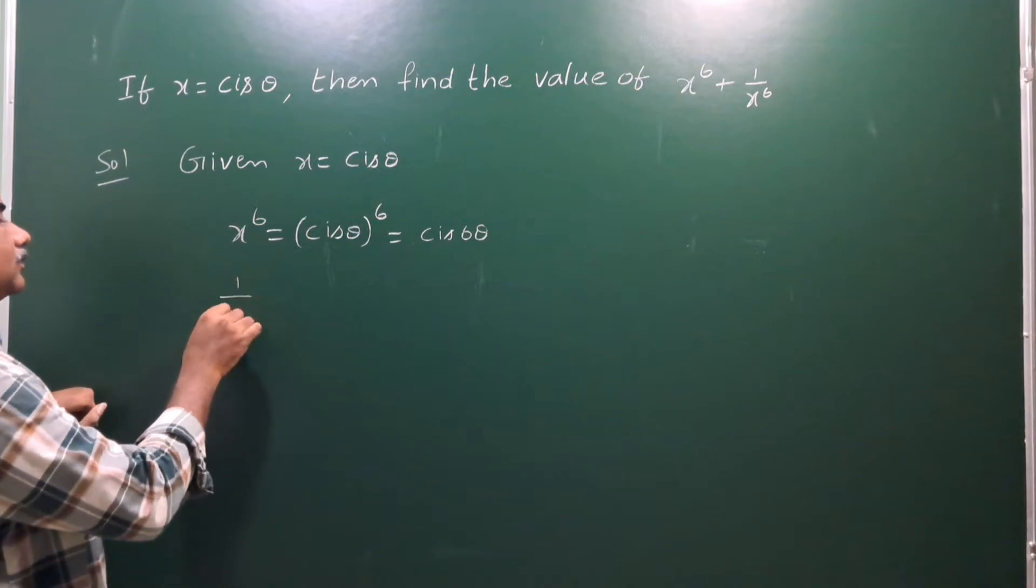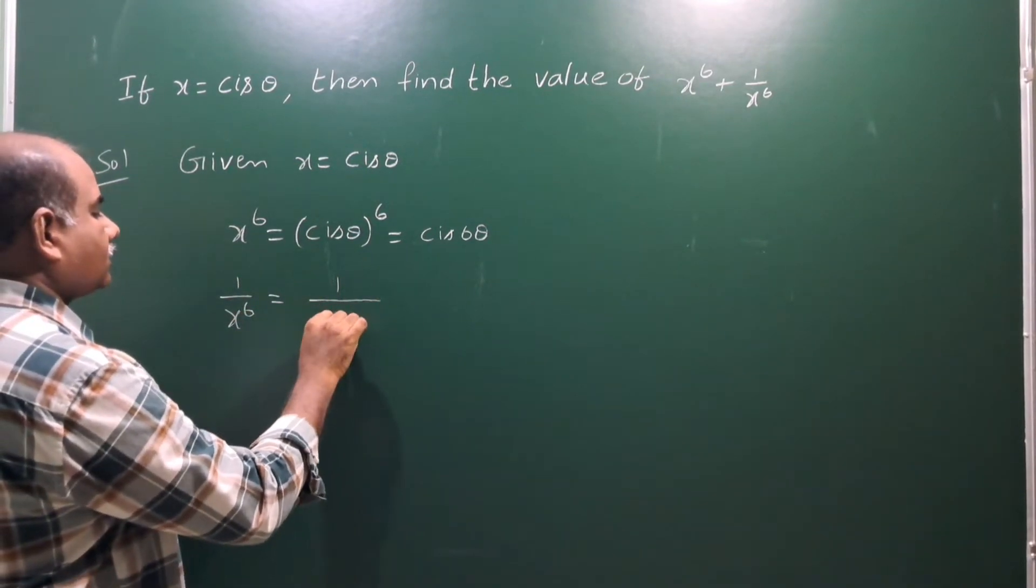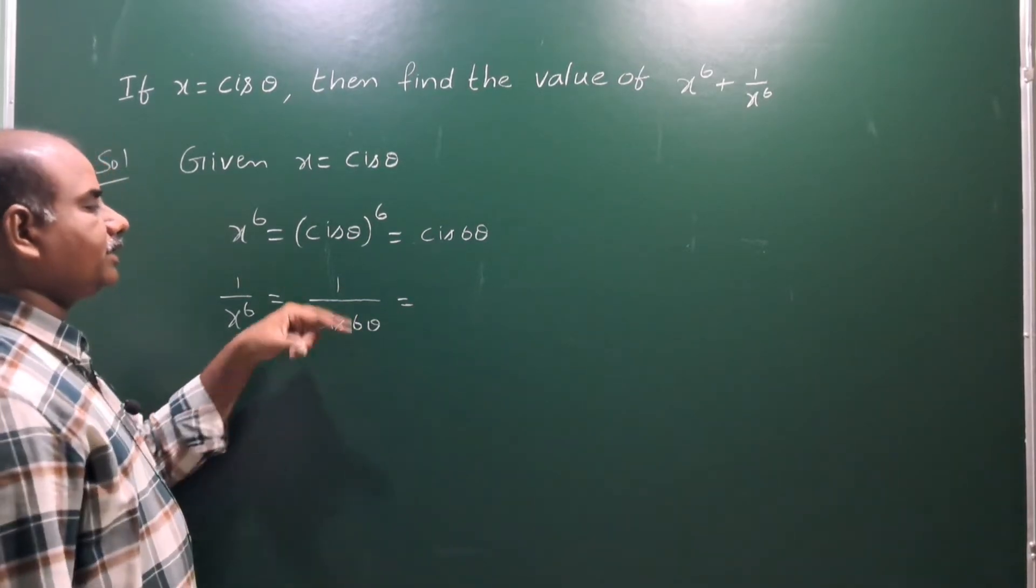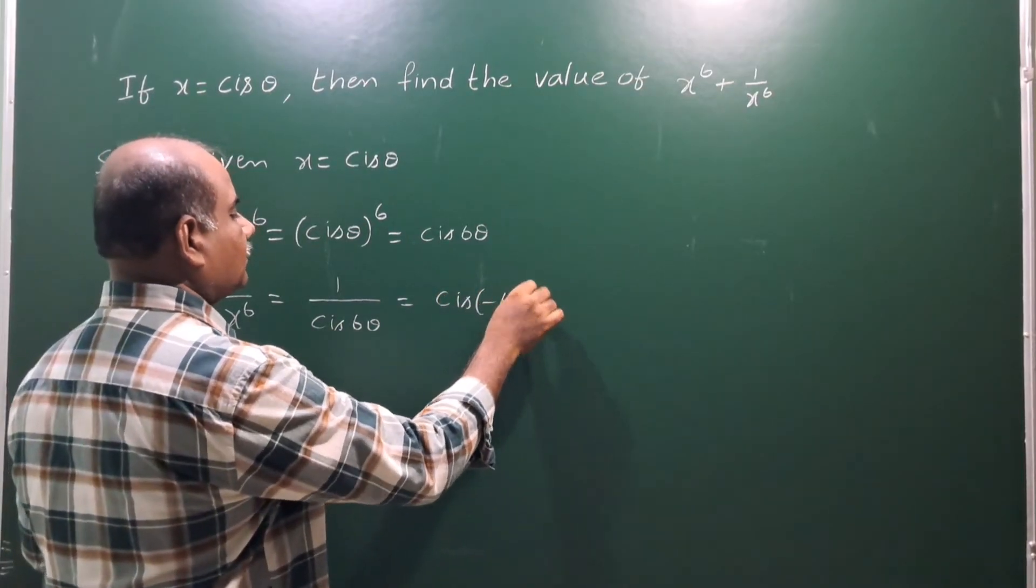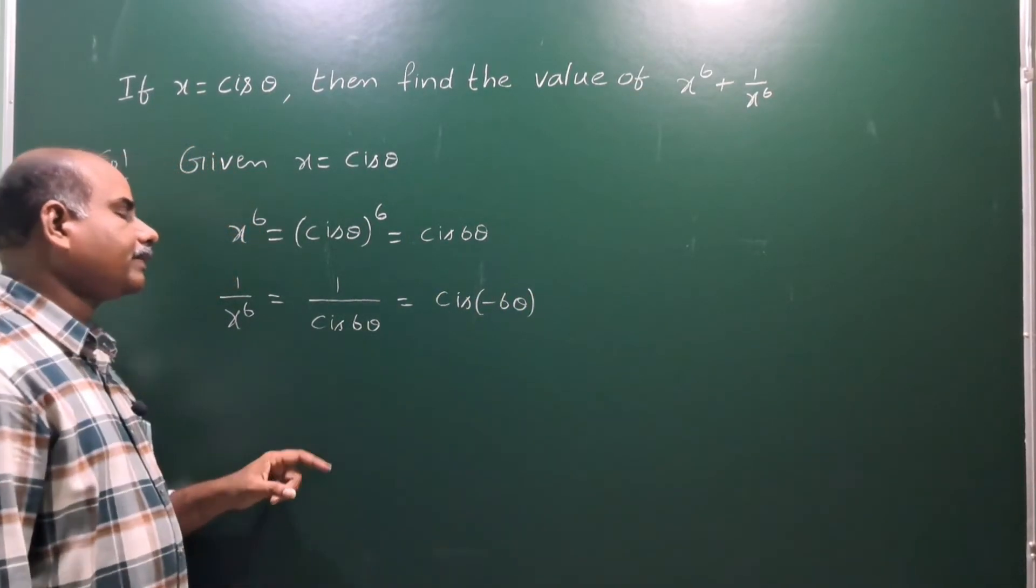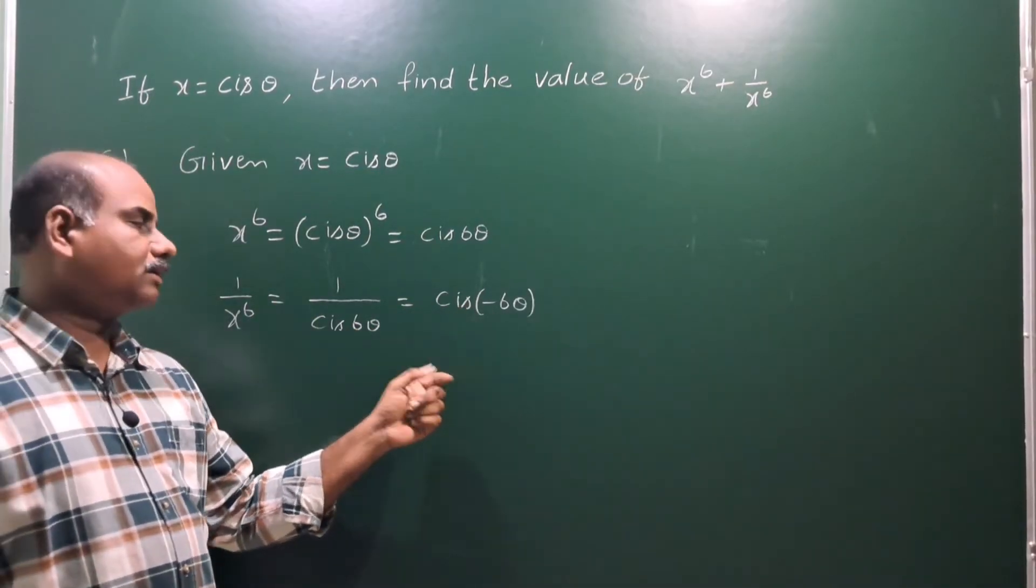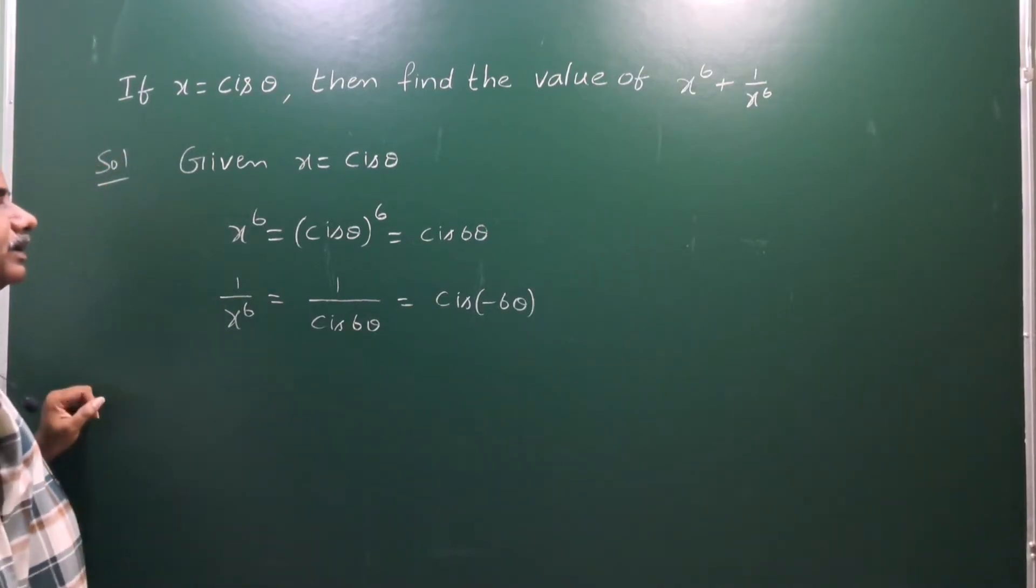And now, 1 by x power 6. So, 1 by cis 6 theta. In cis form, directly we can take it as cis minus 6 theta. 1 by cis 6 theta is cis minus 6 theta, the angle becomes minus. Directly we can write this.